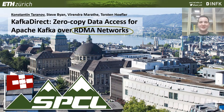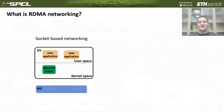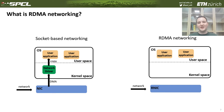Before talking about the system that I designed, I would like to talk about the differences between socket-based networking and RDMA networking. In socket-based networking, packets arrive to the network controller that copies them to the network driver, which is responsible for processing the packets and copying the payloads to the applications. In the case of RDMA, the RNIC has connections on the device, so it is capable of fully processing the packets on the device and then copying the content of these packets directly to the user's buffers.